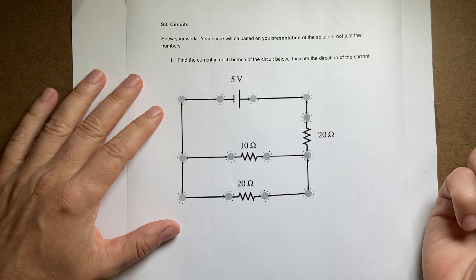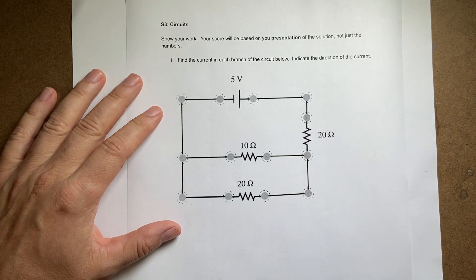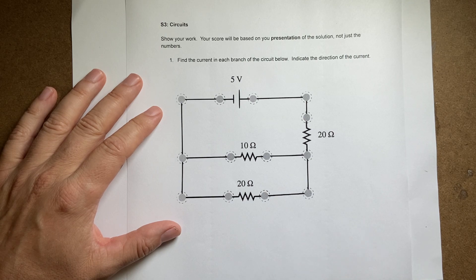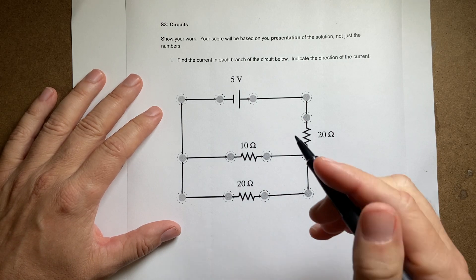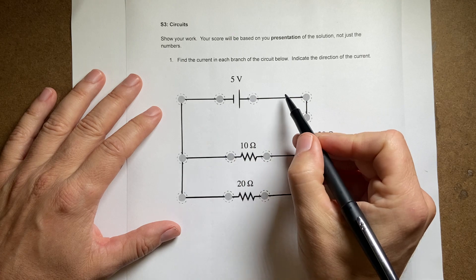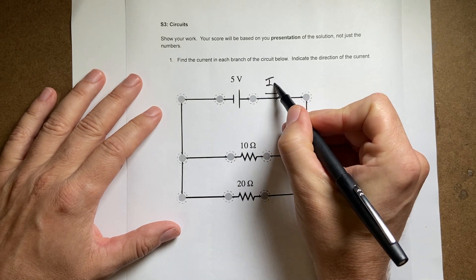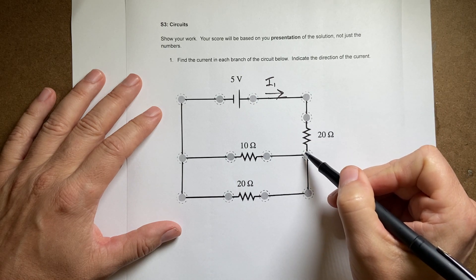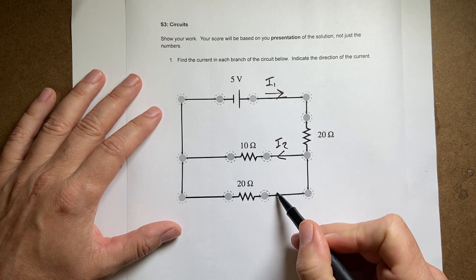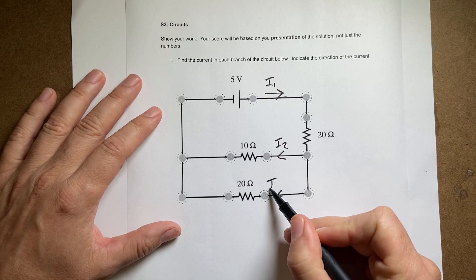Okay so the first thing we need to do, I have a battery, I have some resistors, is to pick the variables for the current and you don't have to be correct here but we need to pick something. So I'm gonna say that's the positive end of the battery so the conventional current comes out of here and I'll call that I1. It comes down through here and then I'm gonna say this is I2 and this is I3.